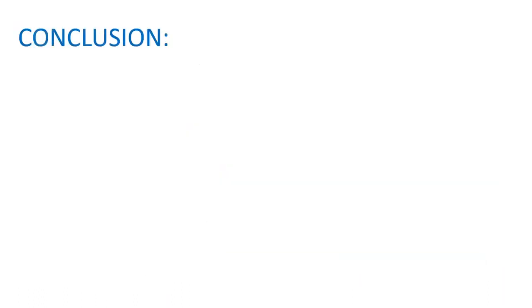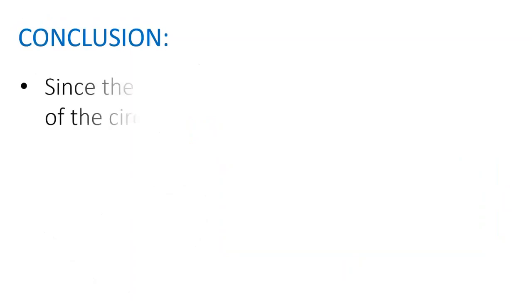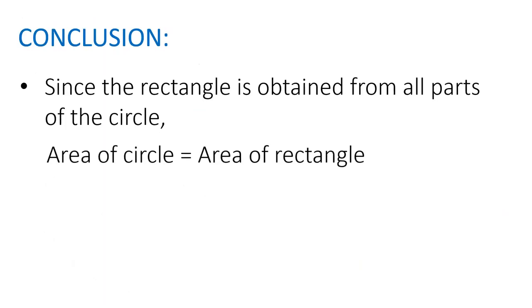Now, conclusion. Since the rectangle is obtained from all parts of the circle, area of circle is equal to area of rectangle.